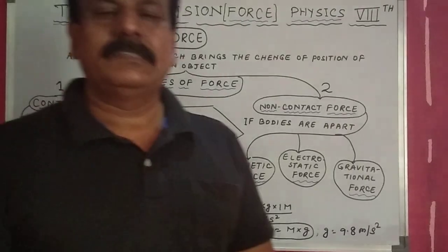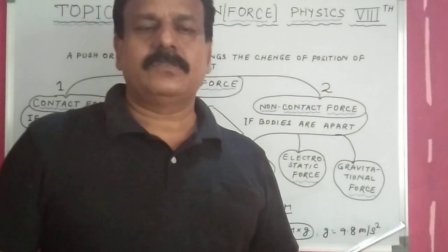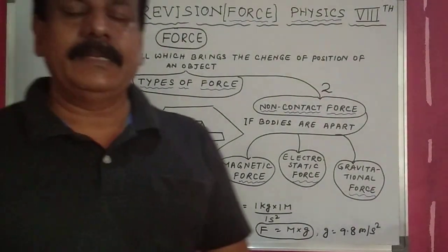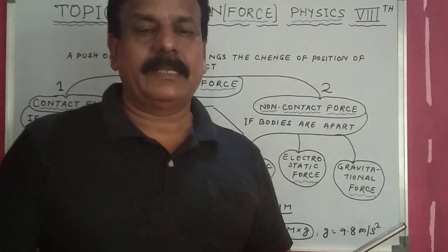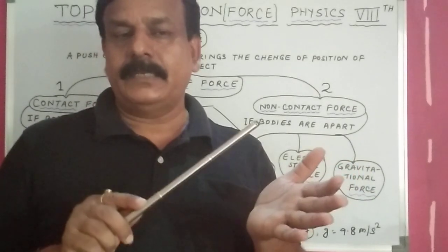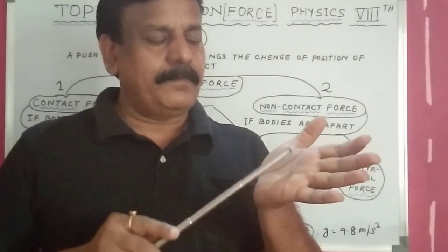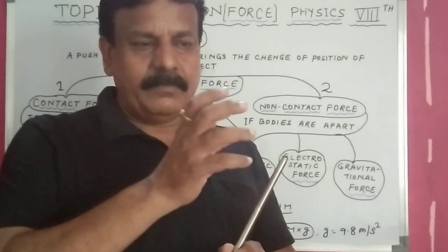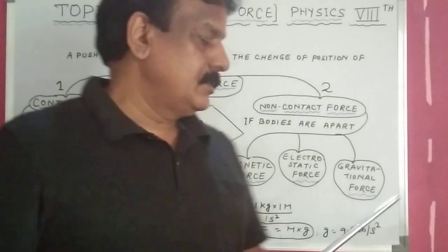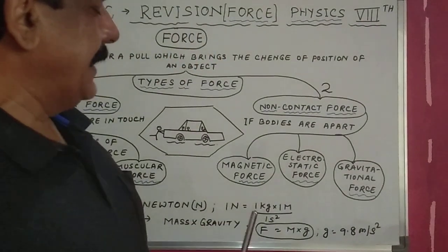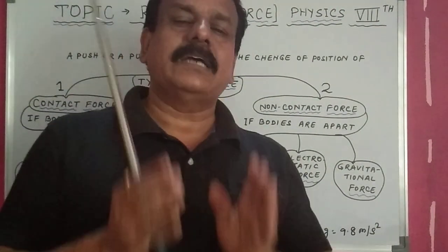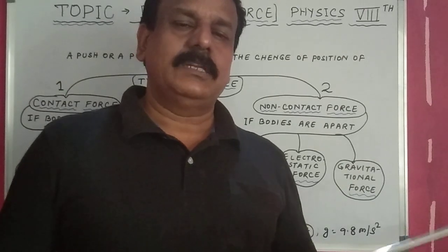Non-contact force has three types. Number one: magnetic force — the force applied by a magnet. In this case you are not touching the magnet to the magnetic object; the magnet is at a distance and still pulls the magnetic object. This is non-contact force. Number two: electrostatic force — the force between two charged bodies.